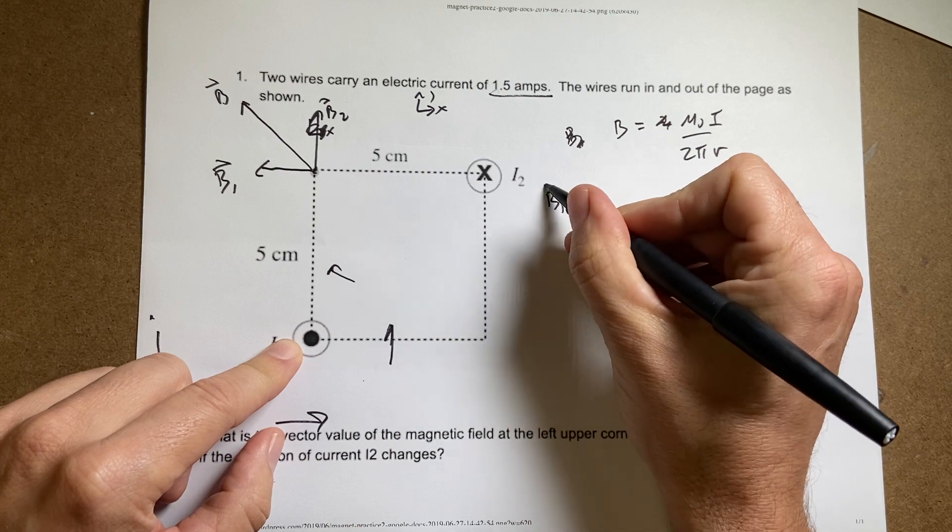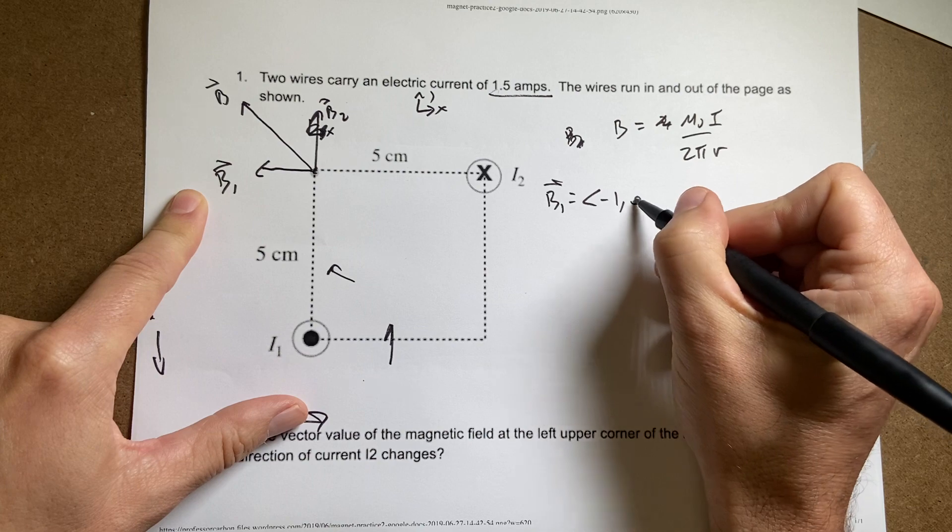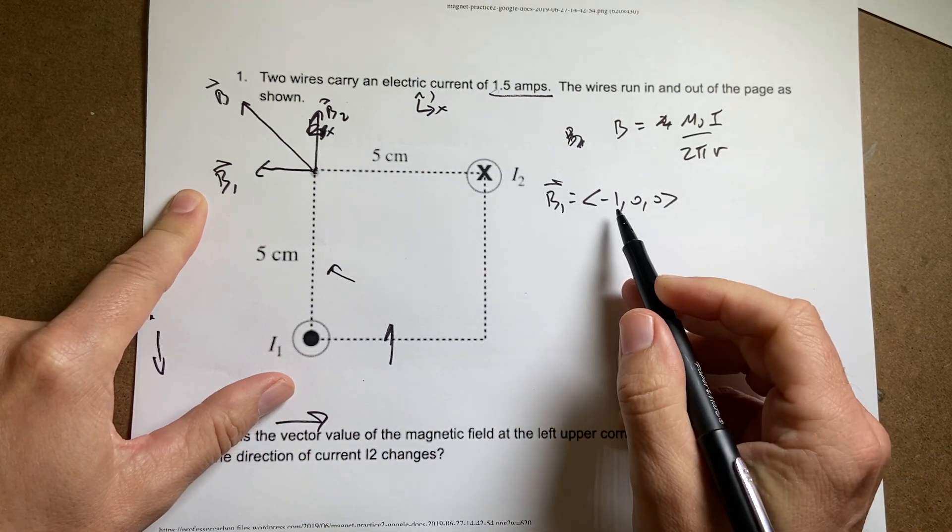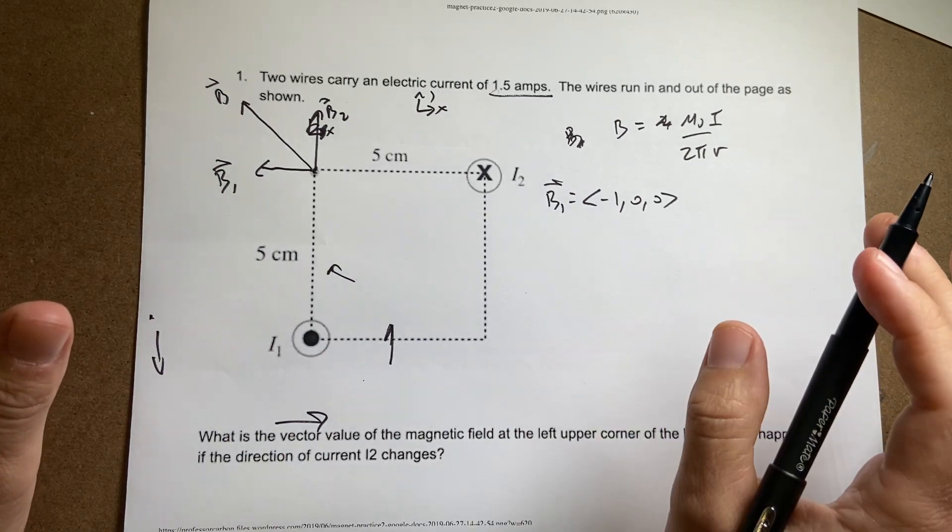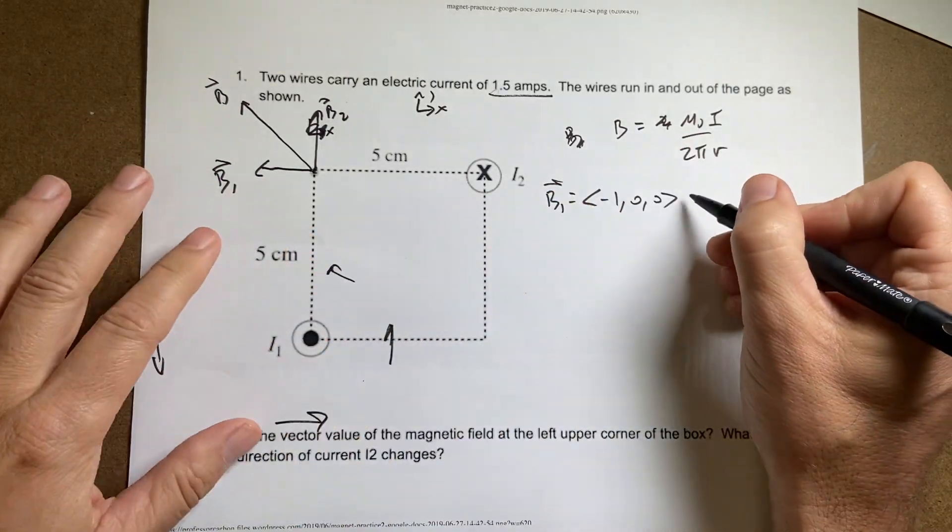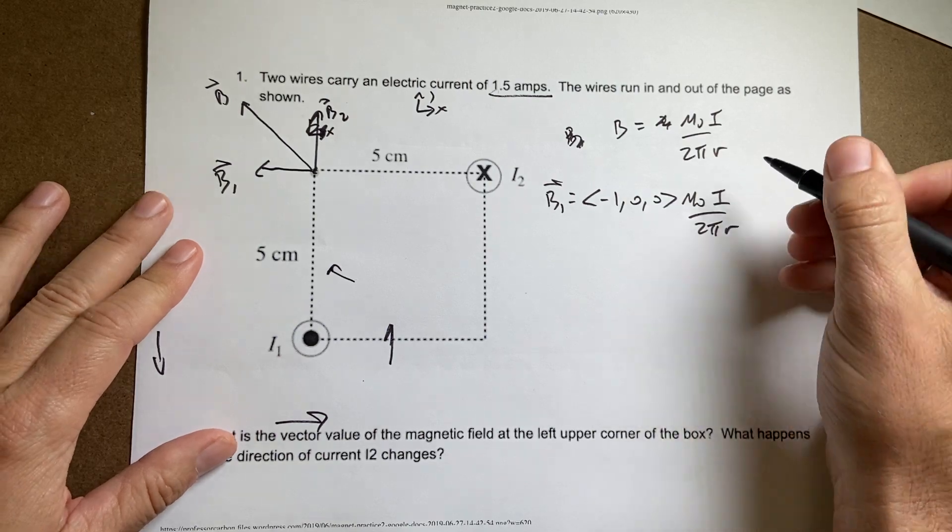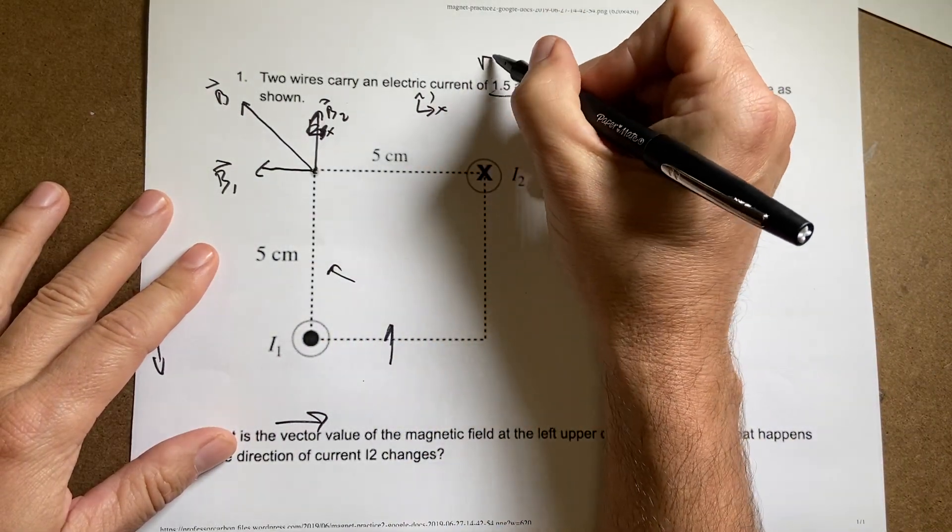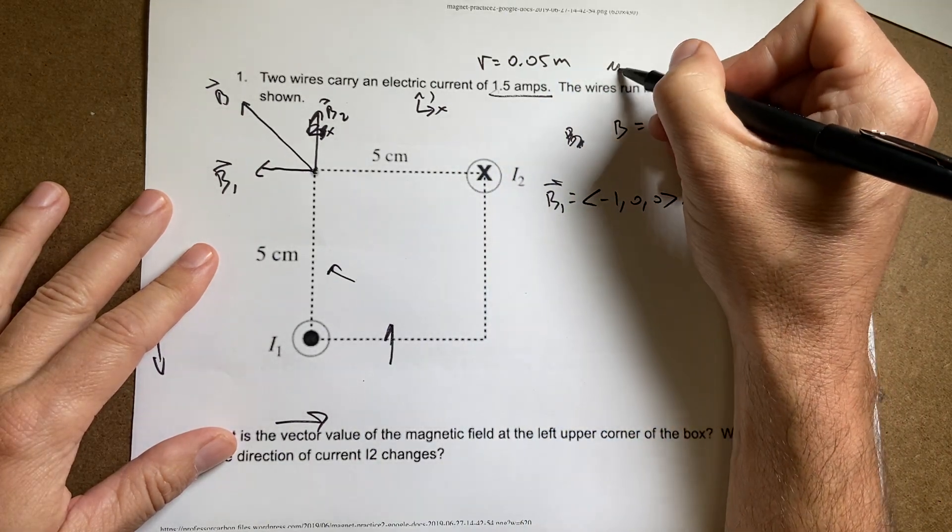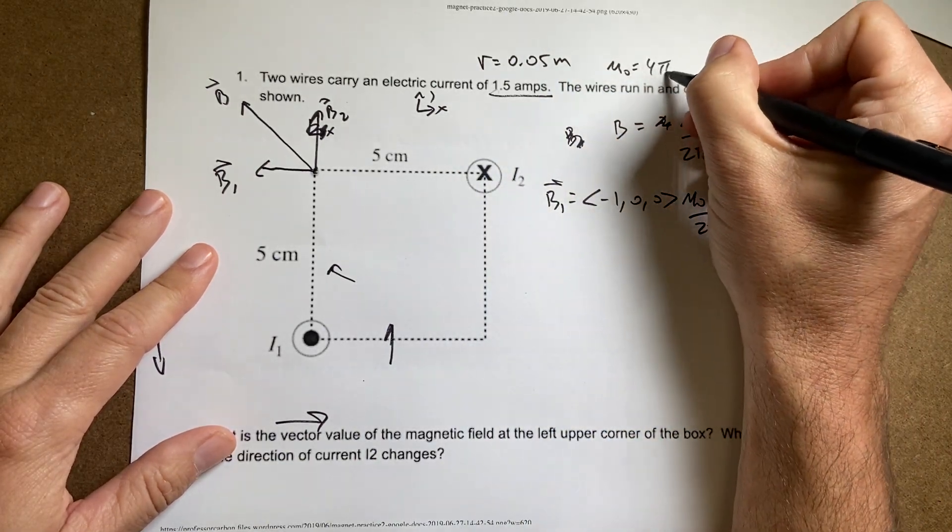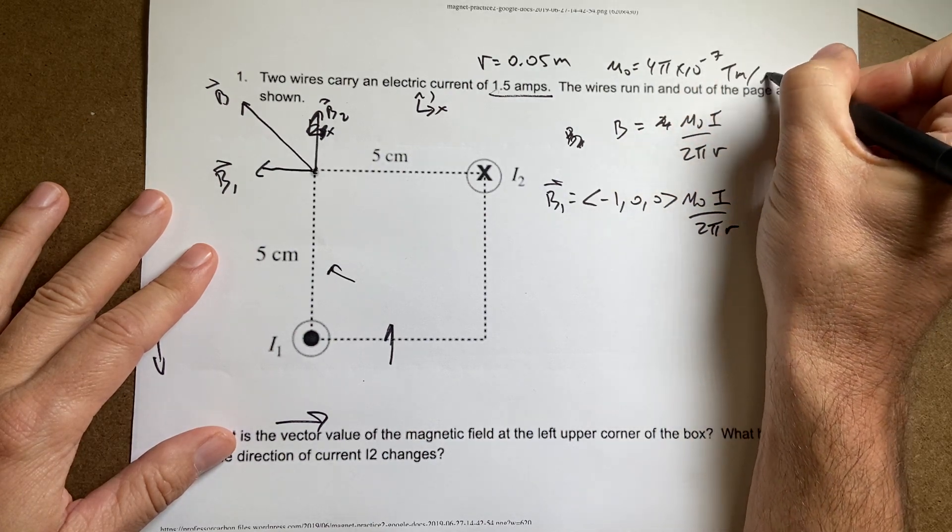So I'm going to write B1 is going to be equal to the vector. I know the direction here. It's going to be negative 1, 0, 0. That's the direction of my vector. And I'm writing this in terms of components. I really think that's the best way to treat this. And then I just have mu naught i over 2 pi r, where r is equal to 0.05 meters.